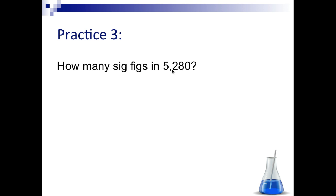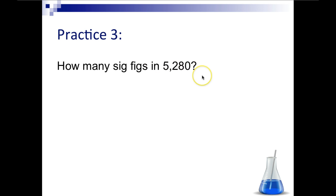Let's look at this one. Pause the video and unpause when you're ready. We do not have a decimal, and we do not have any zeros in the front. We do have a zero at the end, but since we don't have a decimal, that zero at the end doesn't count. So we have three significant digits: 1, 2, 3.